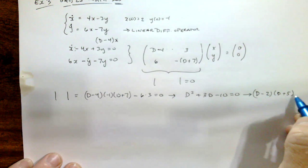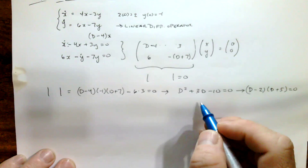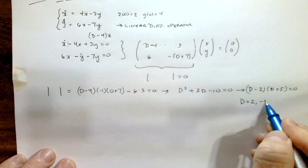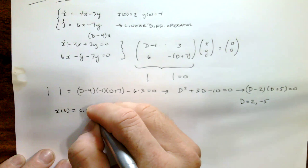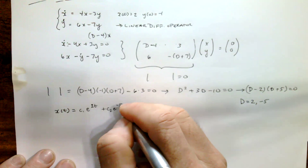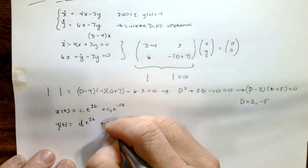This should look really familiar from Example 1 — the form of the equation was different, but the resulting form is exactly the same. So we get D equals 2 or D equals negative 5. This means x(t) equals c₁e^(2t) plus c₂e^(−5t), and y(t) equals d₁e^(2t) plus d₂e^(−5t).